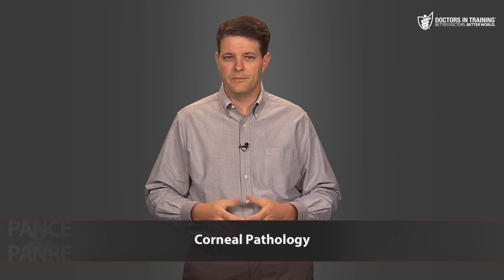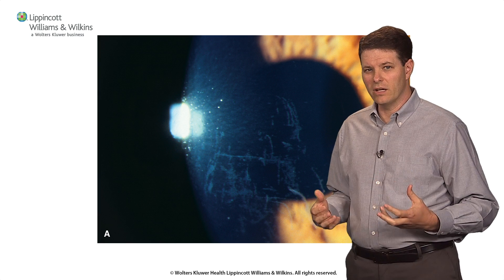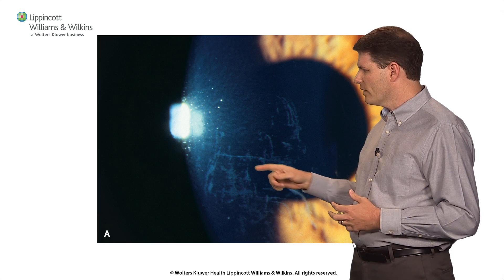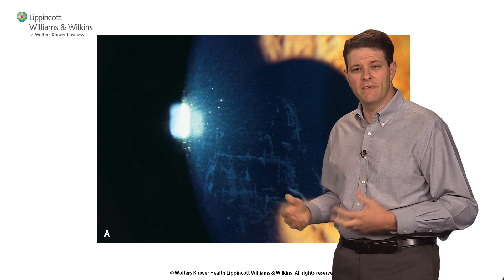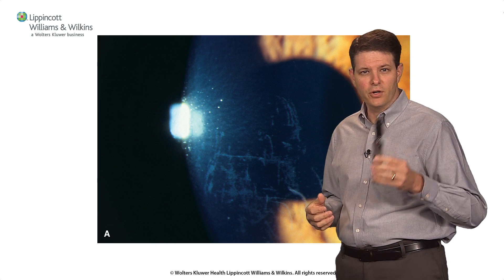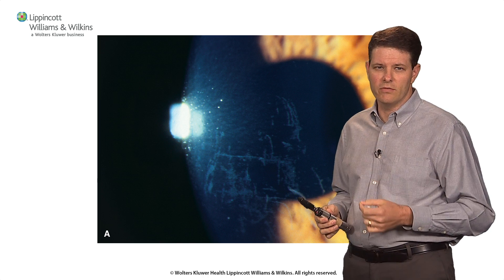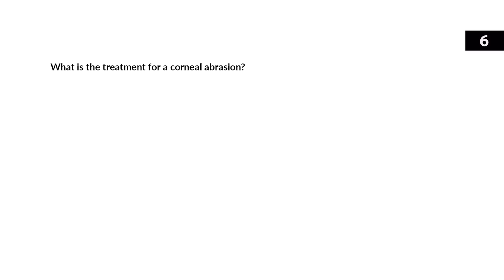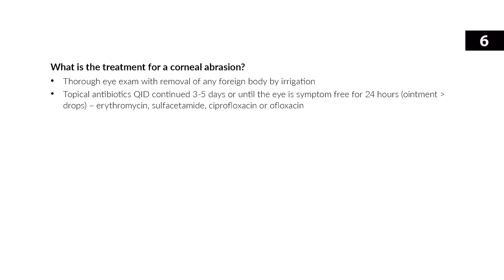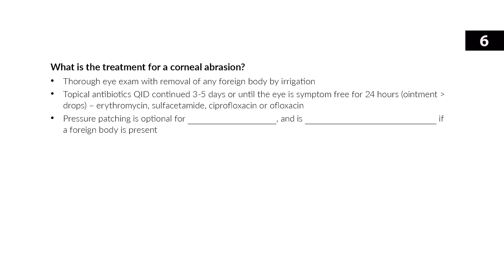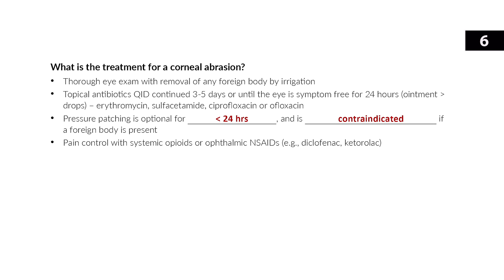The cornea is the clear dome that sits in front of the iris and pupil to let light in. A foreign body — even just an eyelash, fingernail, or contact lens — can cause a corneal abrasion, which you can see with a slit lamp or stain with fluorescein and a Woods lamp or cobalt blue light. Corneal abrasions are very painful and may blur vision. Treatment includes irrigation, topical antibiotics like erythromycin ointment or a quinolone eye drop. Pressure patching is optional for the first 24 hours and is contraindicated if a foreign body is present. Do not prescribe topical anesthetic or steroid eye drops.